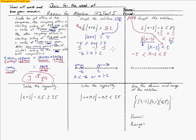So x minus 3 is less than positive 5 but greater than negative 5. Adding 3 to both sides gives negative 2 on one side and 8 on the other. The values of x are greater than negative 2 but less than positive 8. On the number line I place open circles at negative 2 and 8, and shade all values in between.